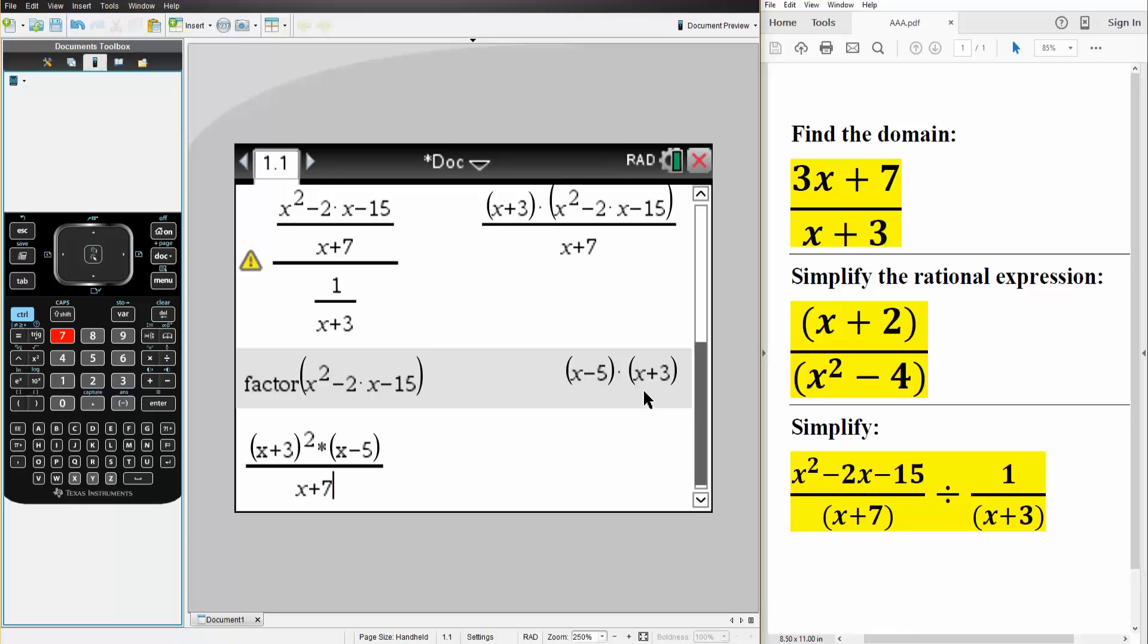This is because x plus 3 times x plus 3, so x plus 3 squared times x minus 5 divided by x plus 7. Both answers are correct, and that's about it.